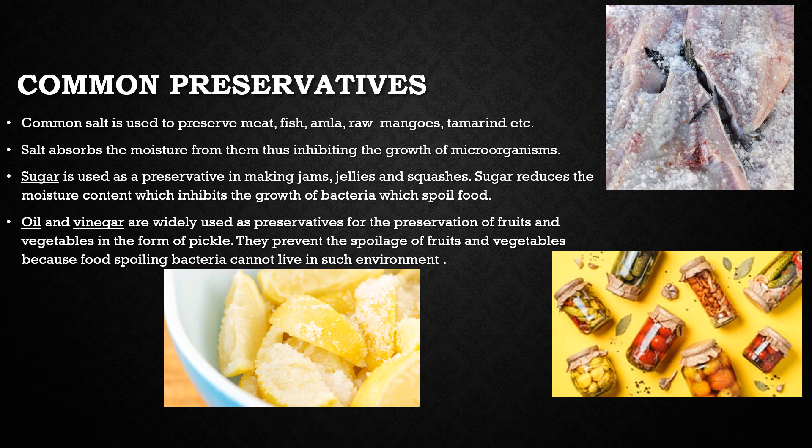The next preservative is oil and vinegar. Mustard oil and other edible oils and vinegar are widely used as preservatives for the preservation of fruits and vegetables in the form of pickles. The use of mustard oil or vinegar prevents the spoilage of fruits and vegetables because food-spoiling bacteria cannot live in such an environment. Some fruits preserved this way are raw mango, amla, lemon, etc. in the form of pickles.